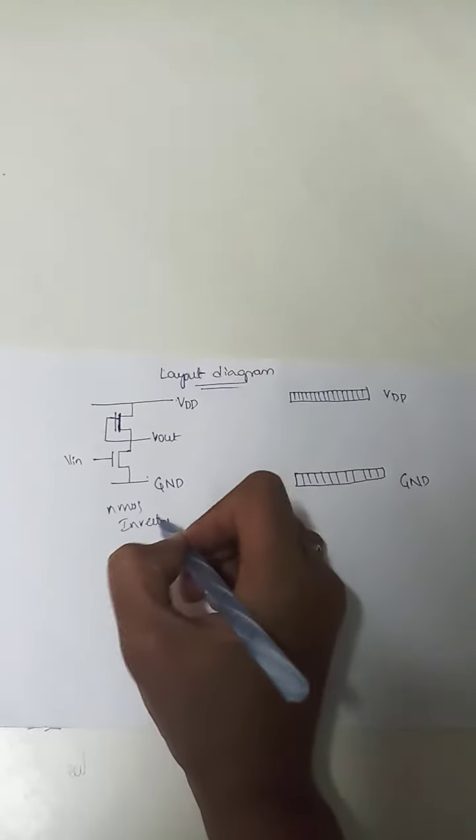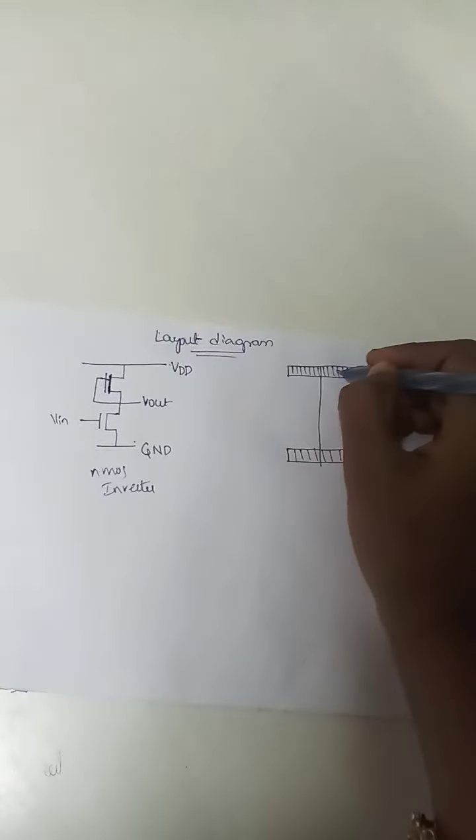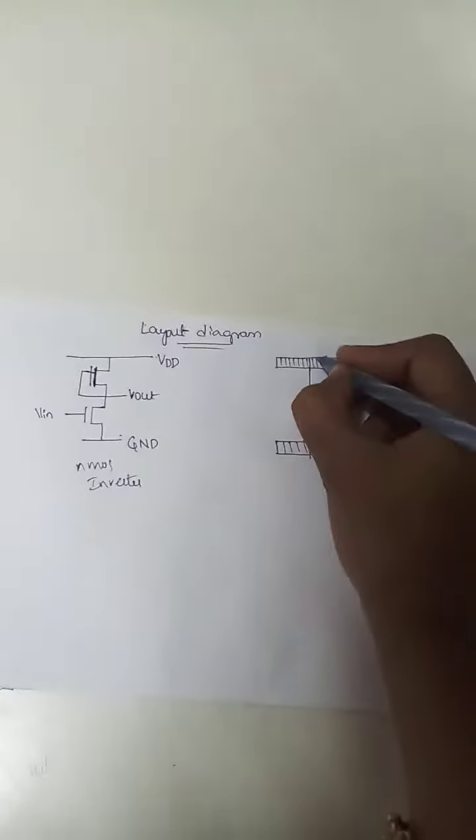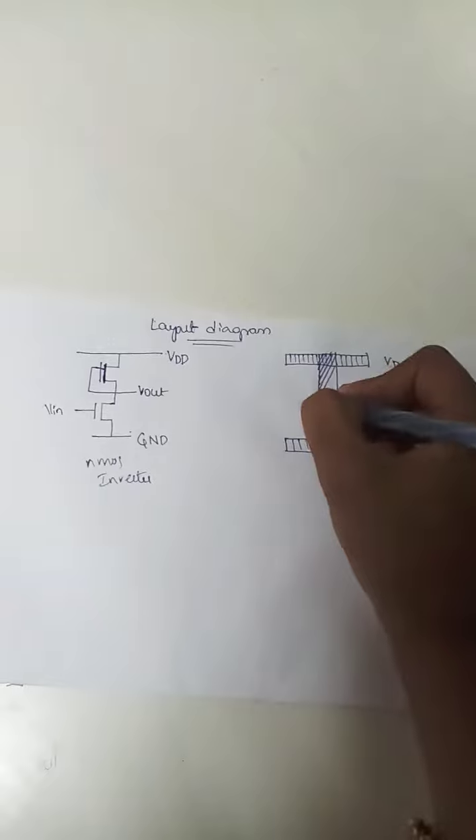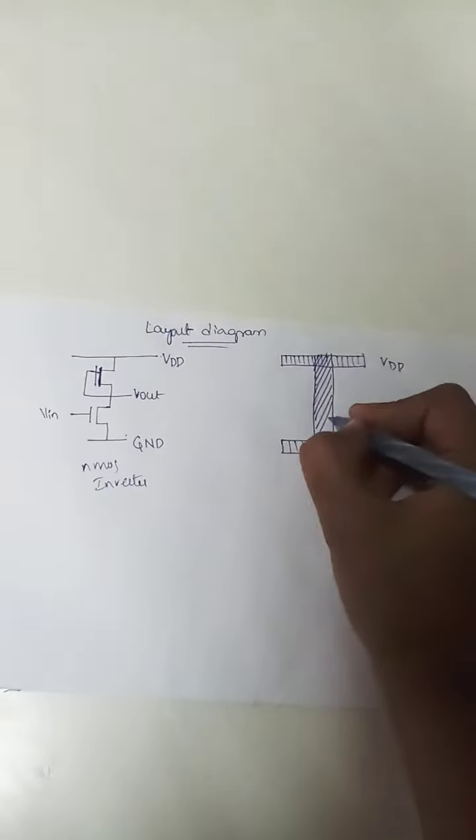For NMOS inverter, the diffusion will be N. So draw a line like this and draw N diffusion like this, which are close to each other.